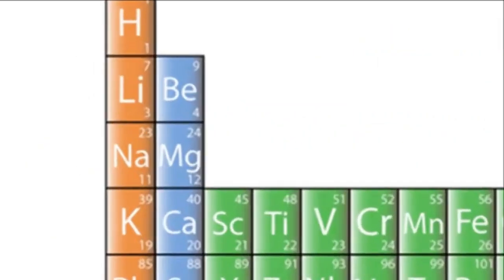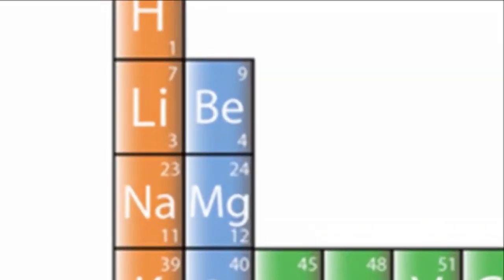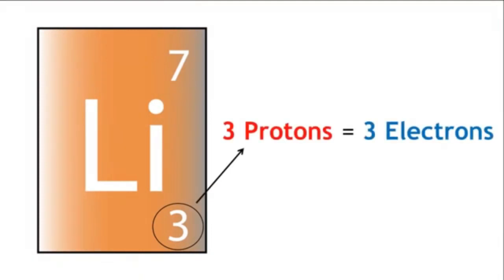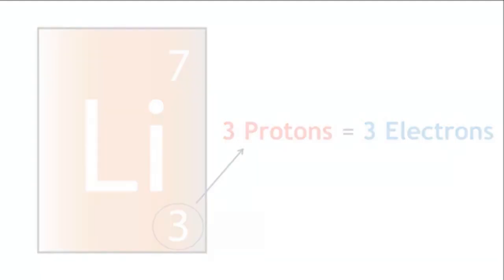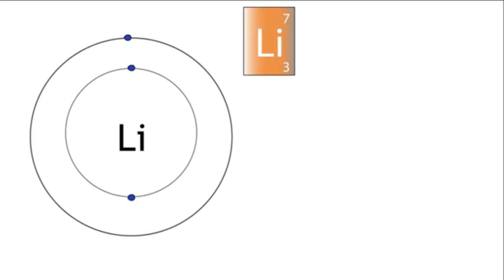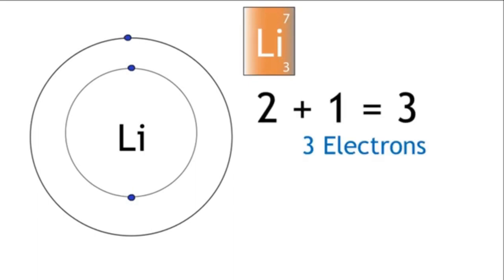Let's look at some arrangements. Lithium has three protons. Therefore, it has three electrons. The first two electrons are placed in the first shell, closest to the nucleus, and the third electron is placed in the second shell. Two plus one — three electrons.